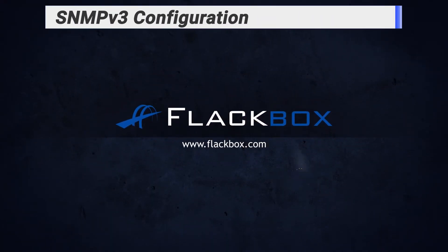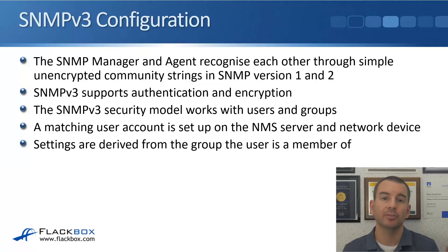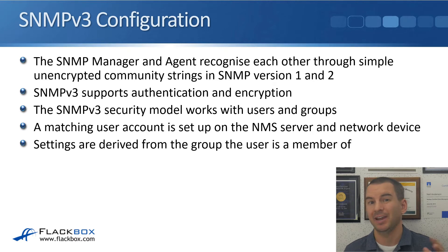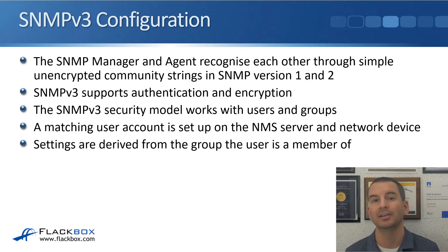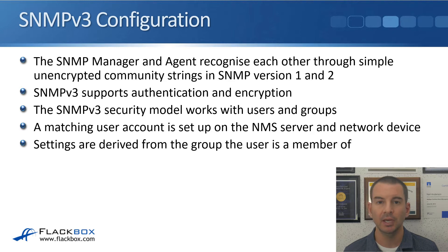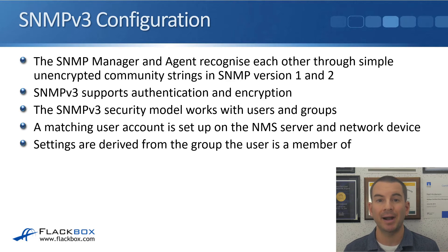In this lecture you'll see the configuration for SNMP version 3. In SNMP version 1 and 2, the SNMP manager - that's our NMS server - and the SNMP agent - that's our router or switch - recognize each other through simple unencrypted community strings, so it's not very secure. That gets improved upon with SNMP version 3, which does support authentication and encryption. With SNMP version 3, the security model uses users and groups, so we configure a user on the router or switch and a matching user on the NMS server - that's how they recognize each other.